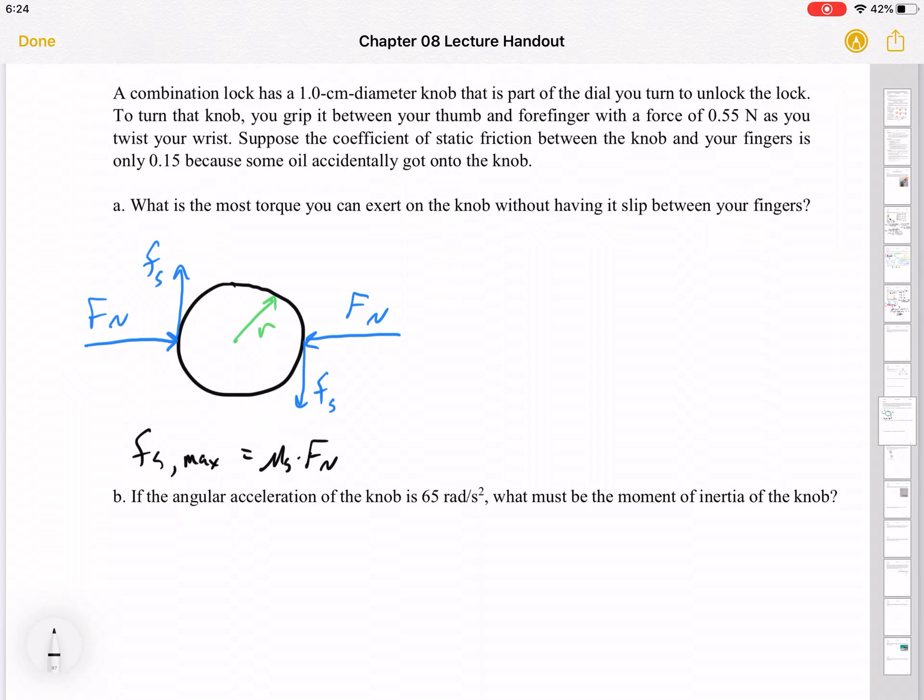In fact, let's do that. Right? So what I get for that is 0.15 times a normal force of 0.55 newtons. So that's fairly small. It's 0.0825.